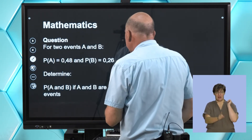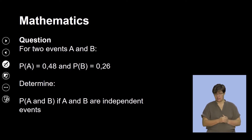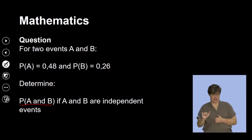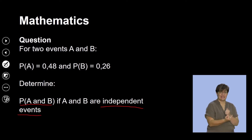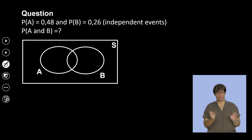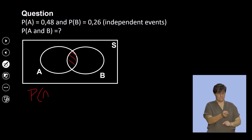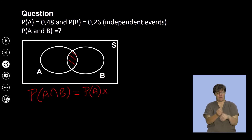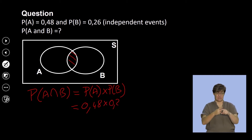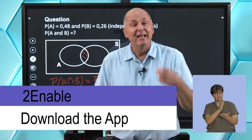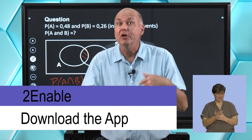The last part: find P(A and B) if the events are independent. The rule for independent events is the multiplication rule: P(A ∩ B) = P(A) × P(B) = 0.48 × 0.26. Use your calculator to verify that result — that's what we do for independent events.